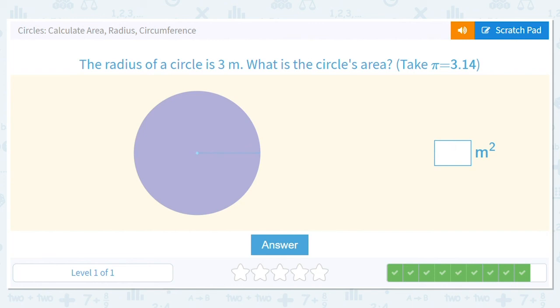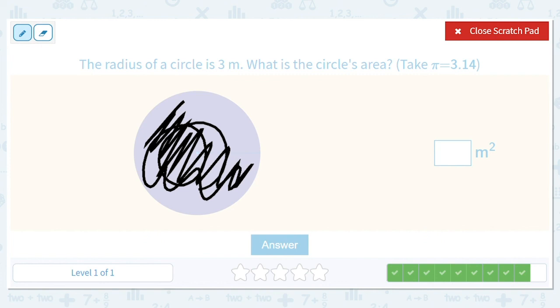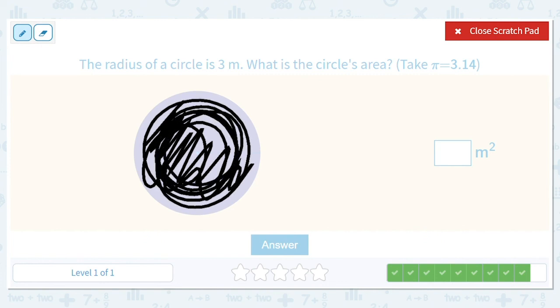And our last one. The radius of a circle is 3 meters. What is the circle's area? Oh, interesting, we have an area problem here. Okay, so the area of a circle—that would be like you're painting the tabletop. How much paint do you need?